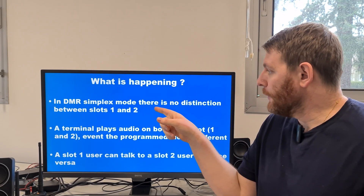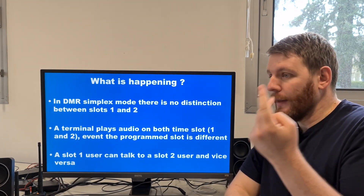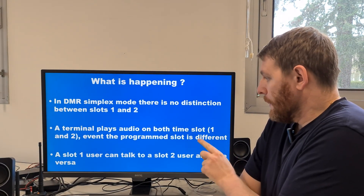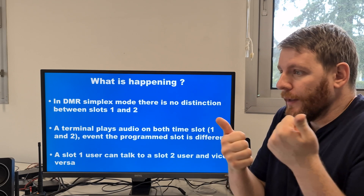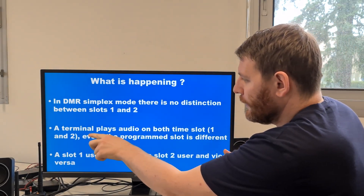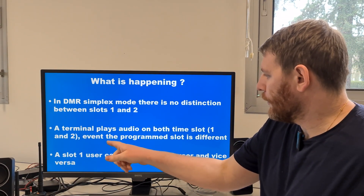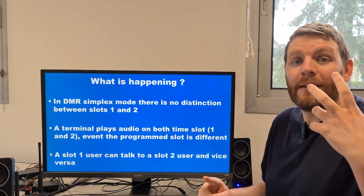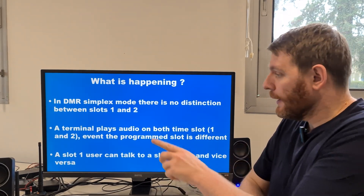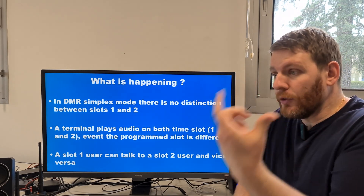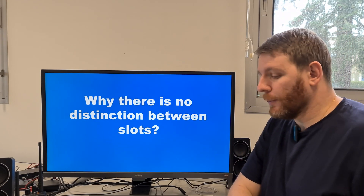What's happening? In DMR simplex mode, there is no distinction between slot 1 and slot 2. A terminal plays audio on both time slots — decoded on both time slot 1 or 2 — even when the programmed slot is different. This is why a slot 1 user can talk to a slot 2 user and vice versa. Why is there no distinction between slots?